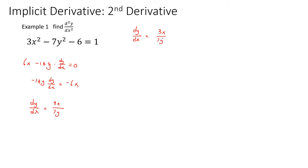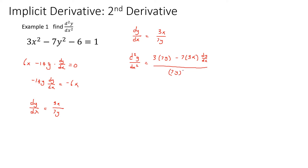To find the second derivative, we take the derivative once again. The same rule applies — you take the derivative of every term on the left side, and dy/dx on the left becomes the second derivative notation. On the right side, we apply the quotient rule, giving us 3 times 7y minus 7 times 3x times dy/dx, all over 7y squared.